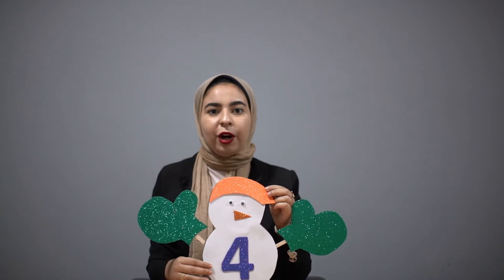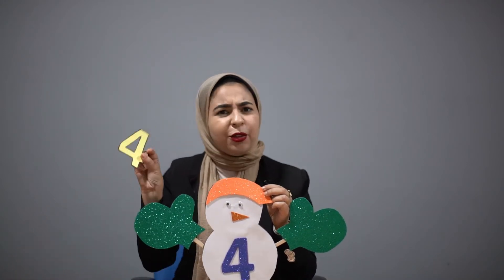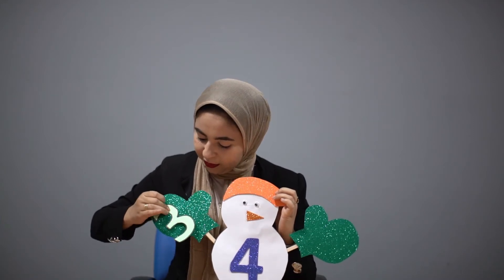Look KG, I have a snowman here. Say hi! The snowman has number four. What comes before four? Before means step back, so before four is three. Is it three? Yes! I will put number three in his hand.